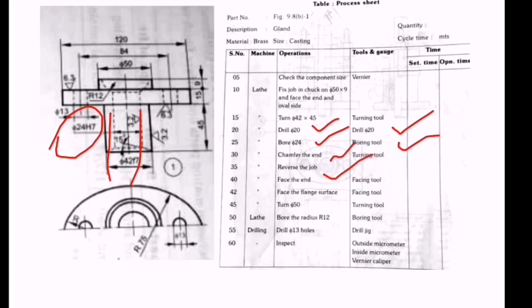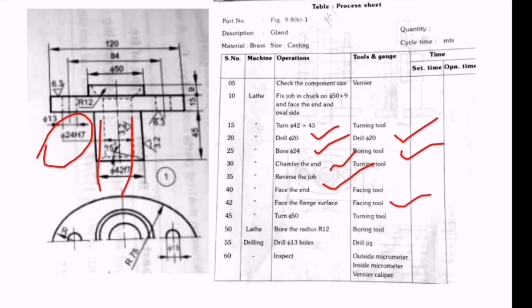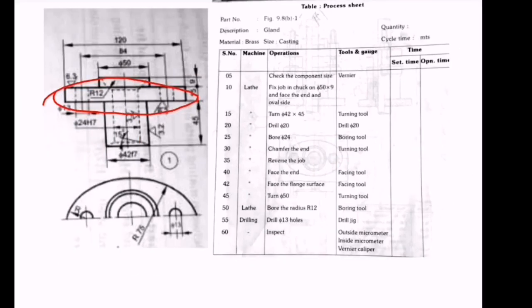One side is completed, so to complete the other side, we reverse the job. Next, face the flange surface with the facing tool - this is the flange surface to be faced.